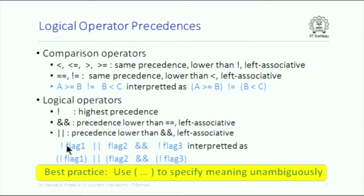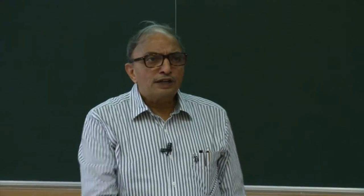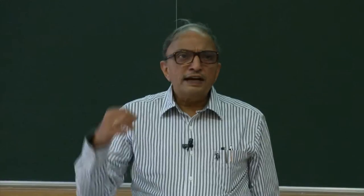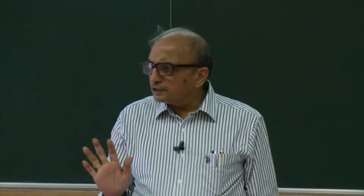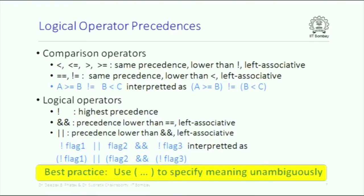For example, !flag1 || flag2 && !flag3 is a complex logical expression. This should be interpreted as (!flag1) || (flag2 && (!flag3)). You can just apply those rules of precedence and interpret. However, as stated earlier, even in the slightest doubt, just use parentheses to properly reflect what you have in mind.